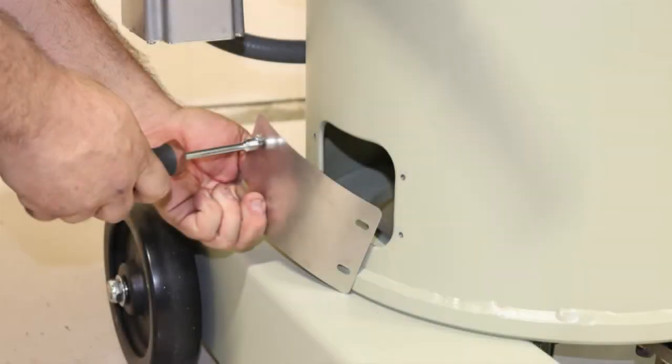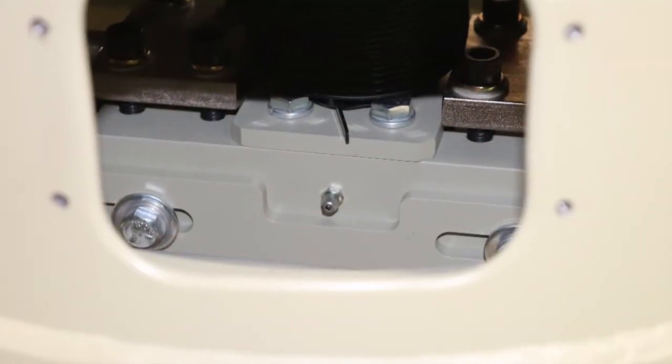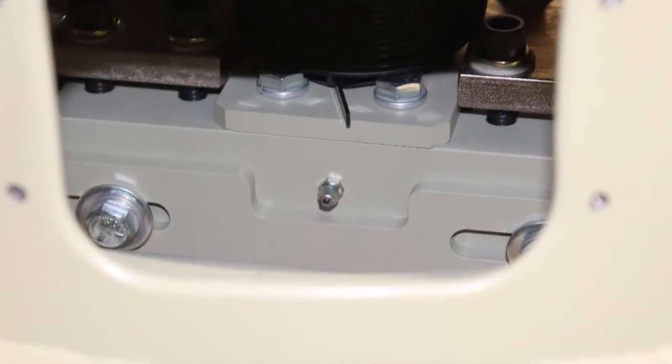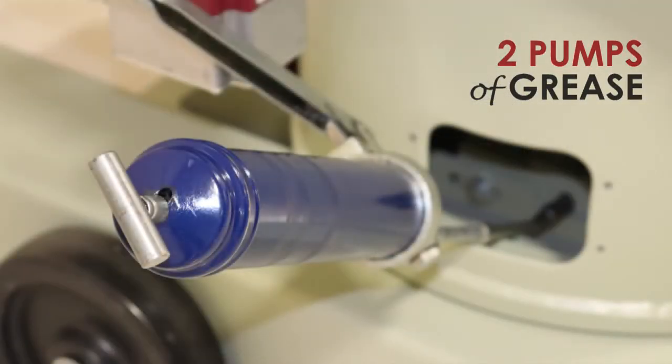Next, you will remove the ball screw bearing cover on the lower left side of the machine using the 5/16 nut driver. Due to the location of the ball screw bearing, it is necessary to have a 45 degree adapter on the end of your grease gun. Grease the fitting with two pumps, then replace the cover.